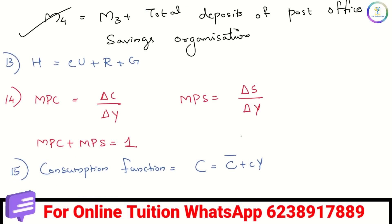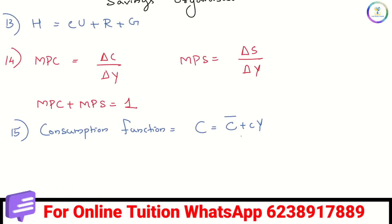High powered money equals Cu plus R plus G — currency and coins, plus reserves, plus government deposits with RBI. This is the RBI liability side. High powered money is also called H.